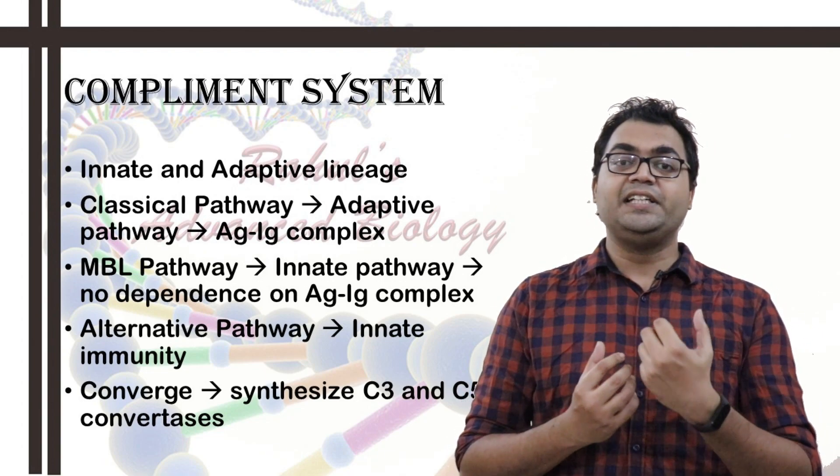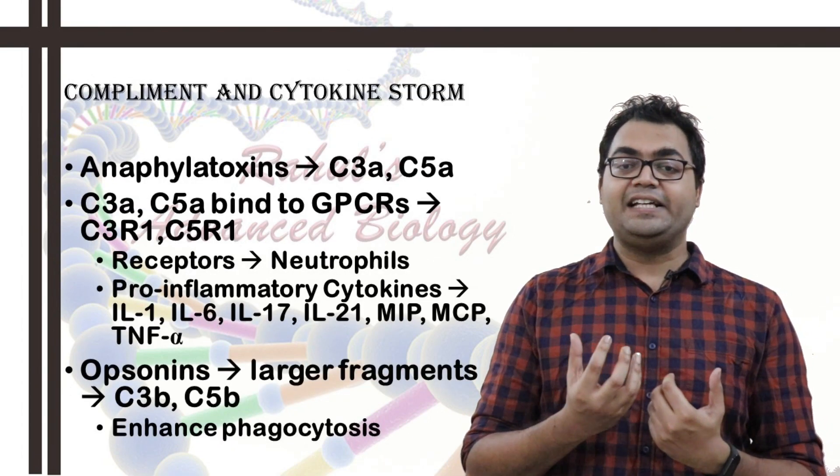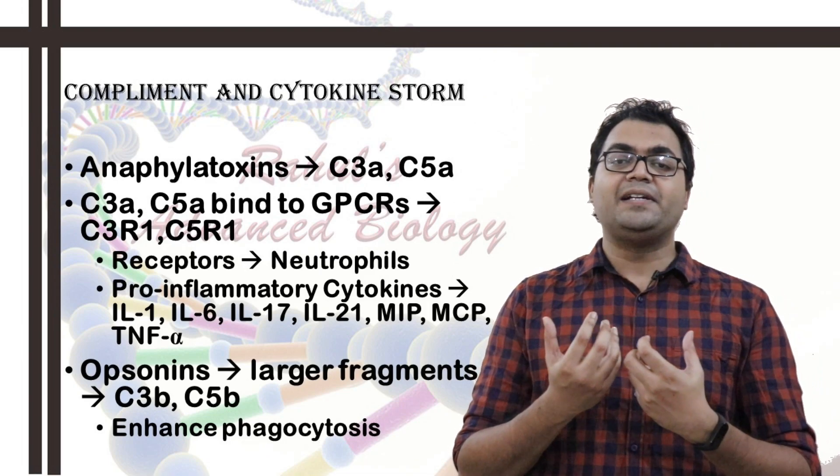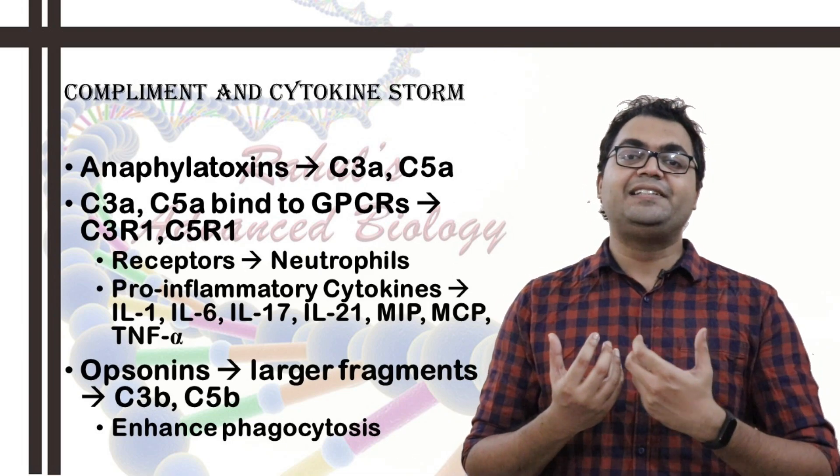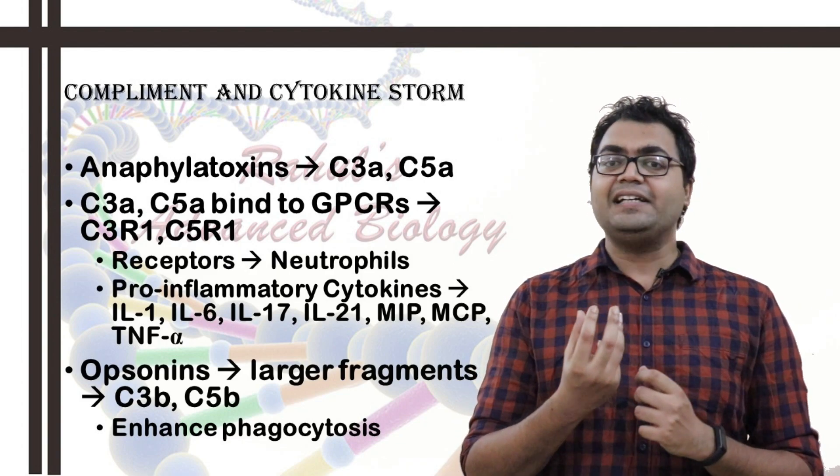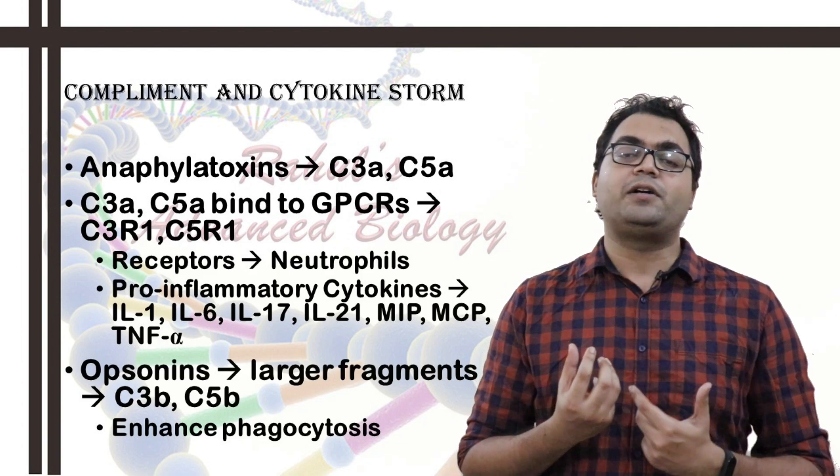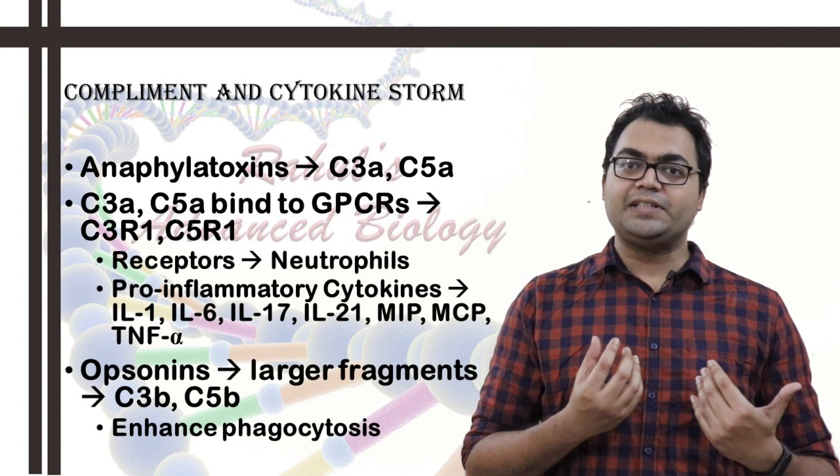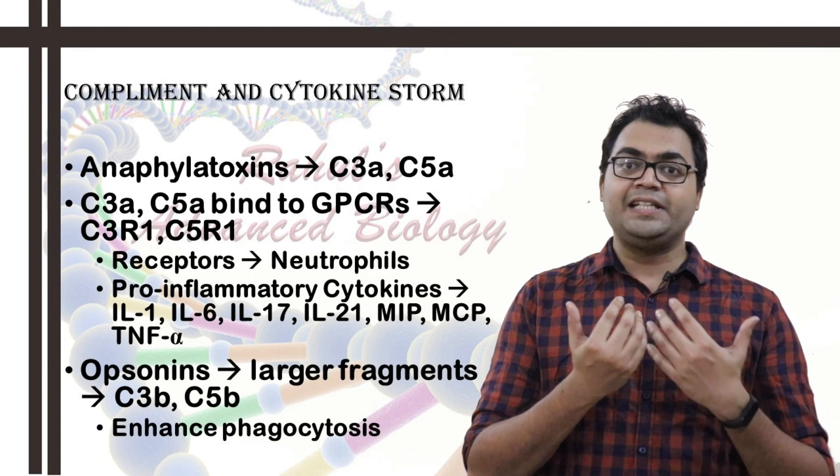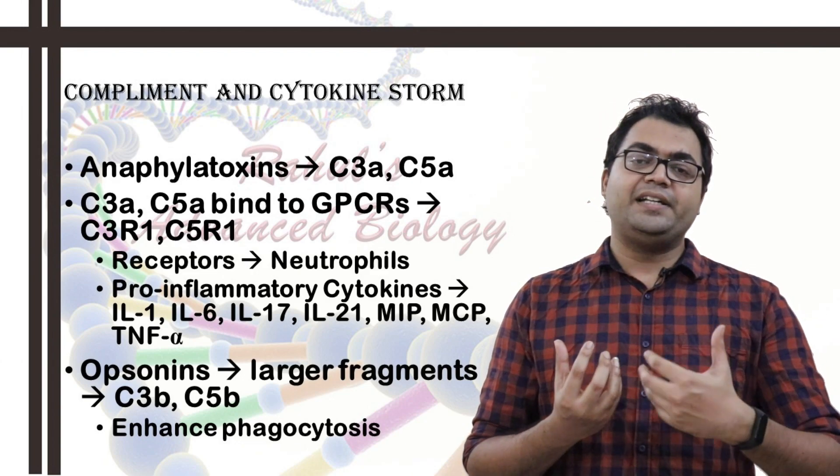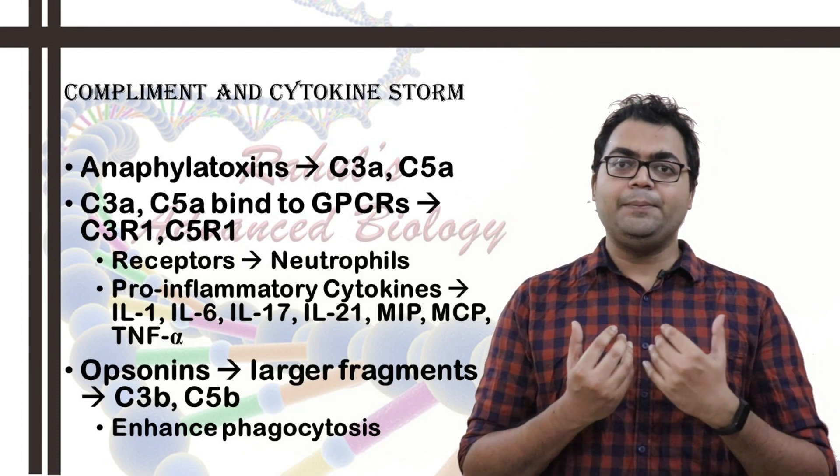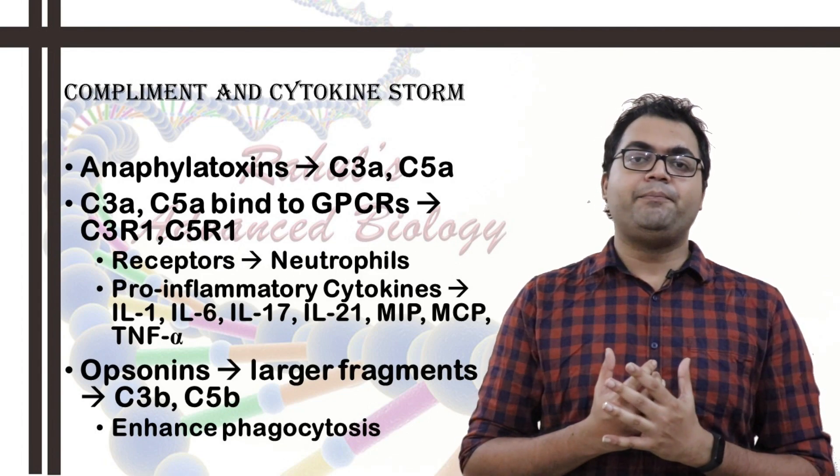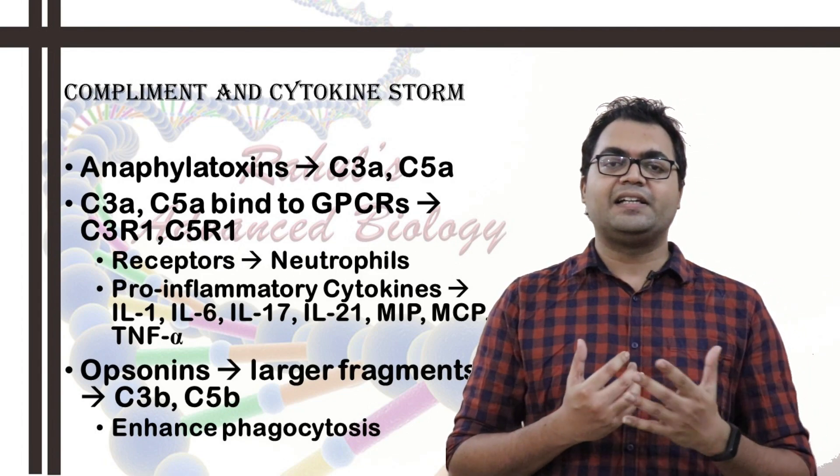Forming the smaller molecules C3A or C5A, and the opsonization-inducing molecules or phagocytosis-inducing molecules, the bigger fragments known as C5B and C3B. Now, the C3A and C5A are also known as anaphylatoxins because they can interact with the C3A receptor present on various kinds of leukocytes like neutrophils, and also C5A can directly bind to various kinds of receptors, specifically belonging to the G-protein coupled receptor family, the largest superfamily of the integral membrane protein receptors present on the various neutrophils and other leukocytes.